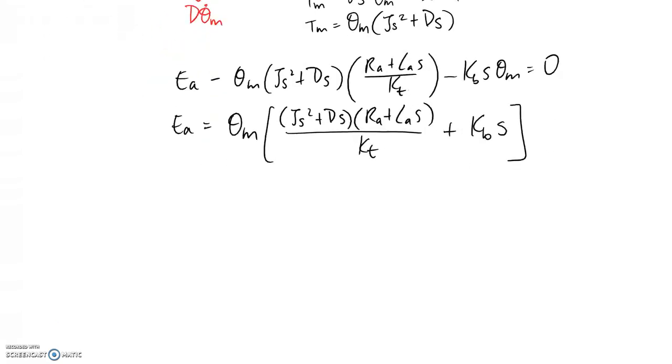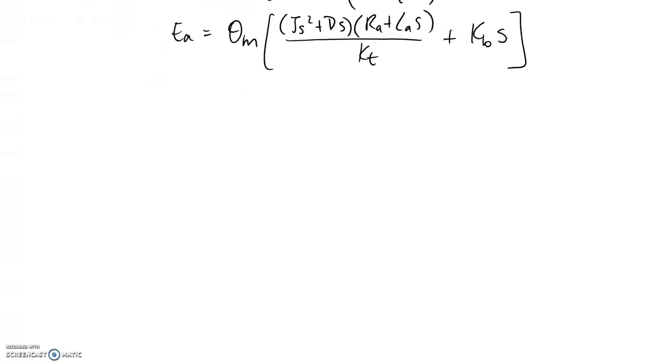Now what I'm going to try and do is move the two things with theta to one side and leave Ea where it is. And at the same time, I'm going to factorize out the theta m. So that's what we're left with. Now if I want to, I can make this a little bit nicer. I can see I've got Kt here. So I can integrate this with this other term. And one way of doing that would just be to multiply both sides by Kt. So this becomes Ea Kt. This one, Kt divided by Kt, it's just going to disappear. And then Kb K s times Kt, we end up with that. So that looks a little bit nicer.